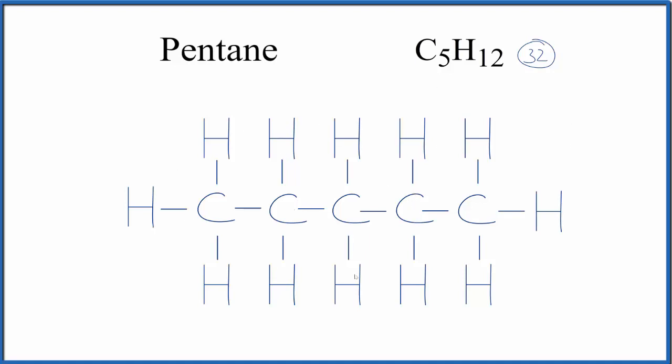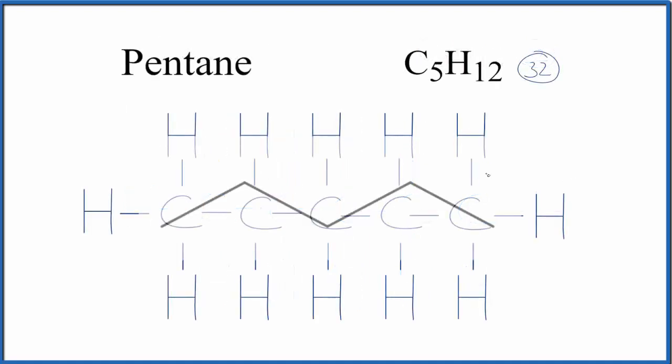We could also write this as what we call a skeletal structure, and that looks like this. So I've overlaid the skeletal structure on top of the Lewis structure, and you can see at the end we have a carbon right here. Here's a carbon, here's a carbon, carbon, carbon. So the skeletal structure is just these lines here, and we don't draw the hydrogens.